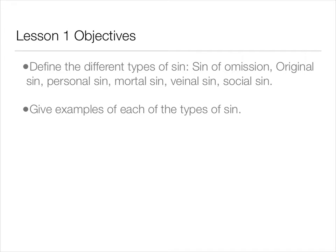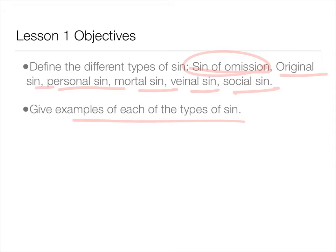Our learning objectives are to define the different types of sin. We're going to define sins of omission, which we're going to do right now in the warm-up, original sin, personal sin, mortal sin, venial sin, and social sin. By the end, you should be able to give examples of each of these types of sin.